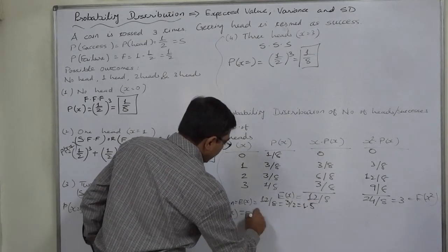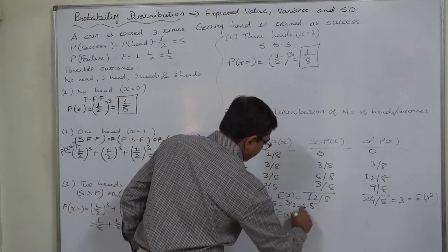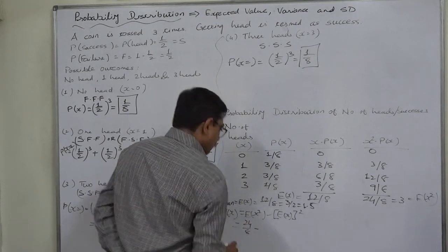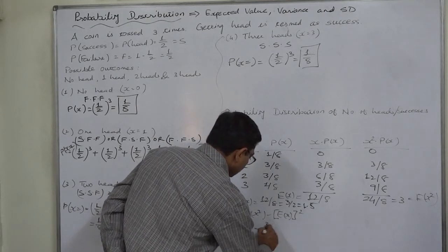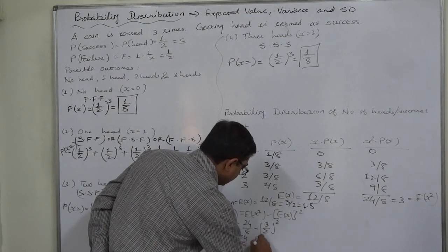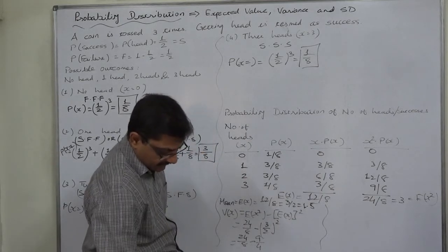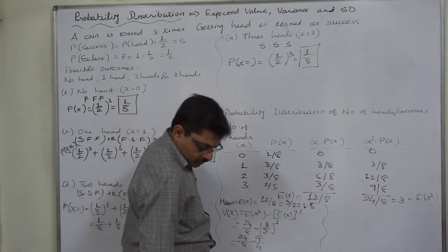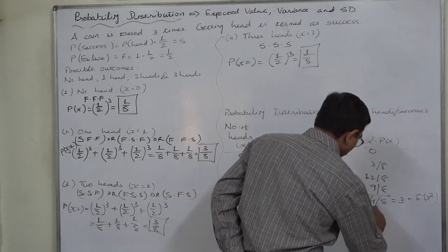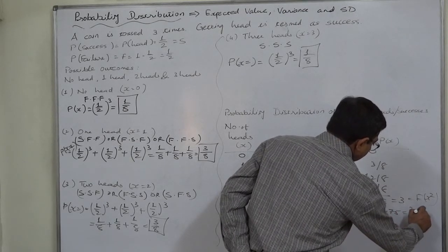The variance is E(X²) minus [E(X)]², that is 24/8 minus (3/2)², which is 24/8 minus 9/4. This simplifies to 3 minus 2.25, giving a variance of 0.75, or 3/4.